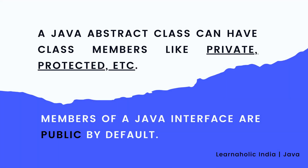Eighth, a Java abstract class can have class members like private, protected, etc., whereas members of a Java interface are public by default.